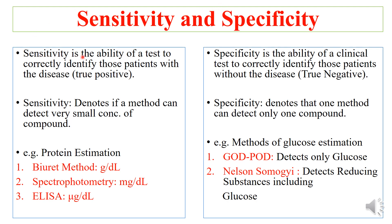Sensitivity is the ability of a test to correctly identify those patients with the disease — they help in finding out the true positive patients. Sensitivity also denotes whether a method can detect very small concentrations of a compound or not. So here we are going to see an example of protein estimation.